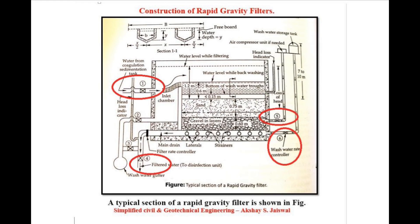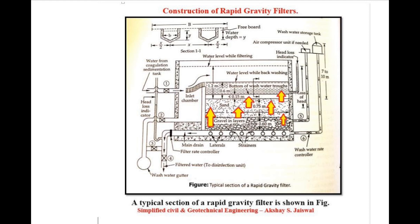Valves 1 and 4 are closed and valve number 5 and 6 are opened. Shurvaat mein valve number 1 aur 4 ko band rakha jata hai aur valve number 5 aur 6 ko khola jata hai. The wash water and compressed air are thus forced upward from the under drainage through the gravel and sand beds. Wash water aur compressed air ko under drainage mein maujood gravel aur sand se hote hue upar ki oor force kiya jata hai.